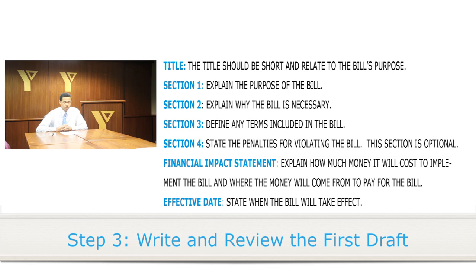Section 3: You will define any terms that you have included in your bill. For example, if your bill is related to schools of the District of Columbia, does your bill only affect public schools or will it affect parochial, private, or public charter schools? Section 4 is optional. In section 4, you need to state what the penalties are if someone violates your bill. You do not have to include this section if your bill does not require any penalties.